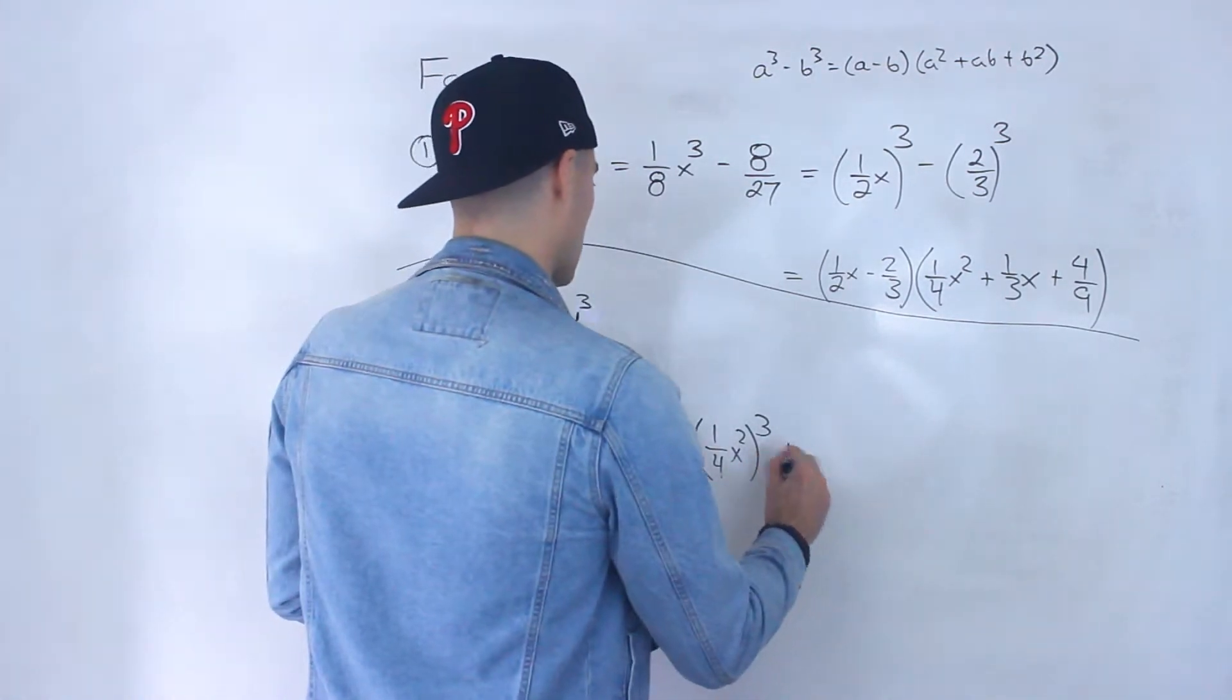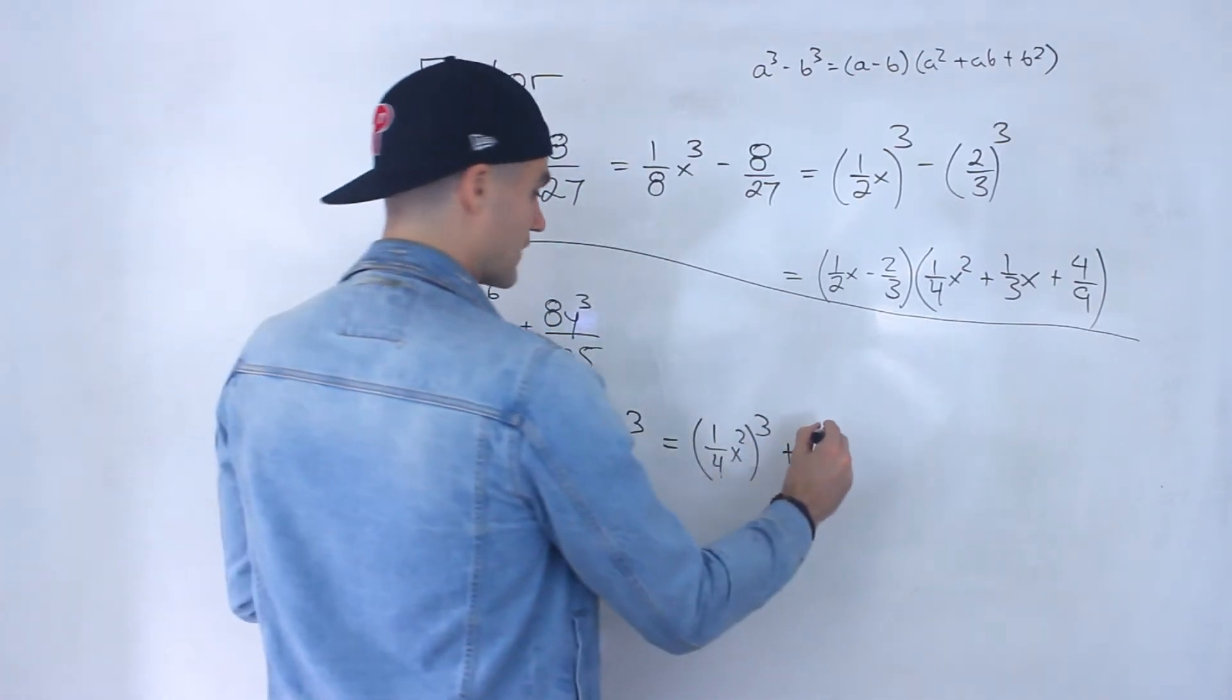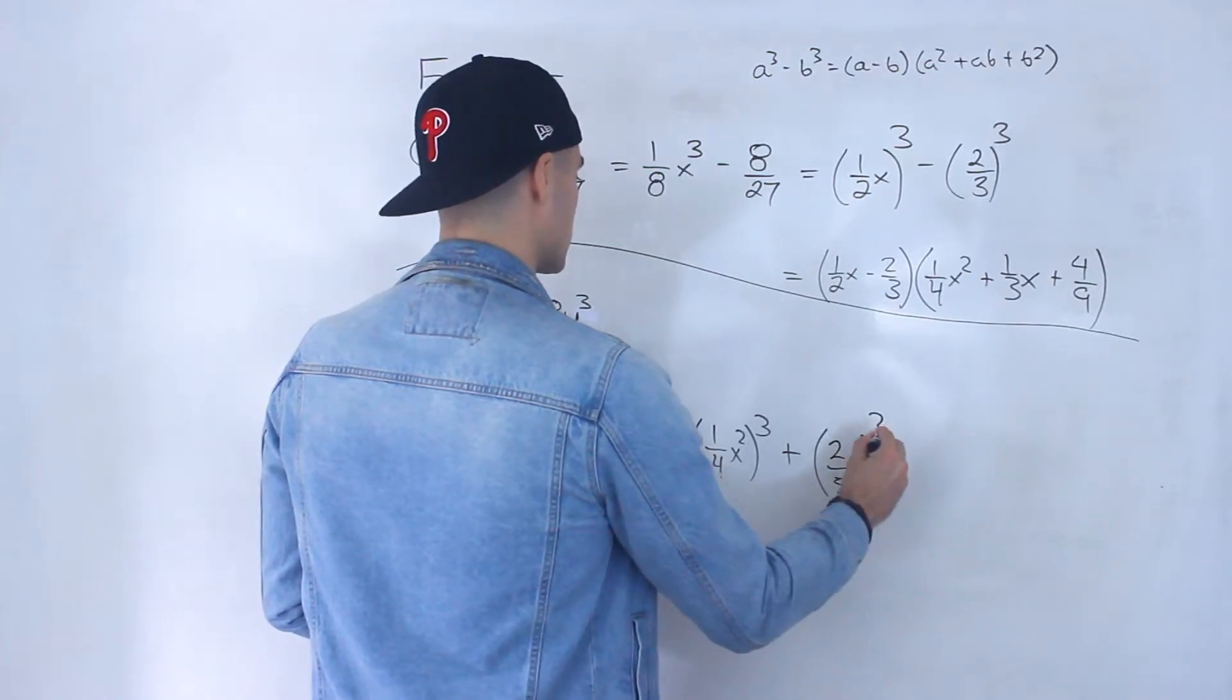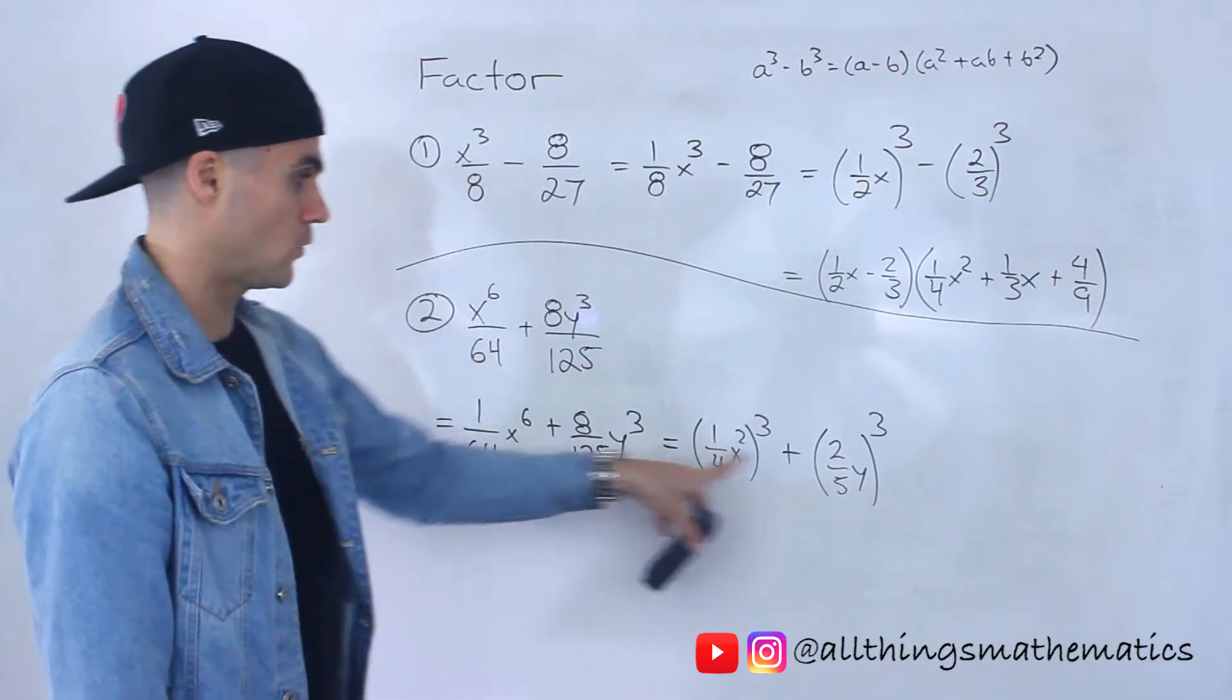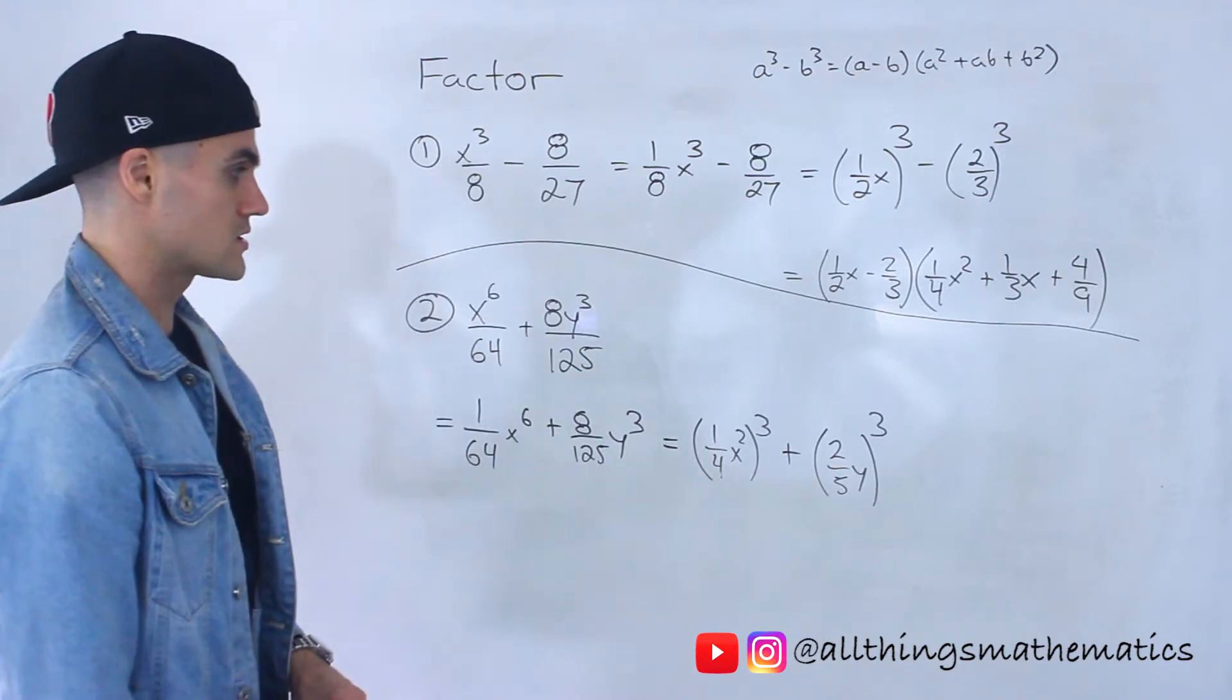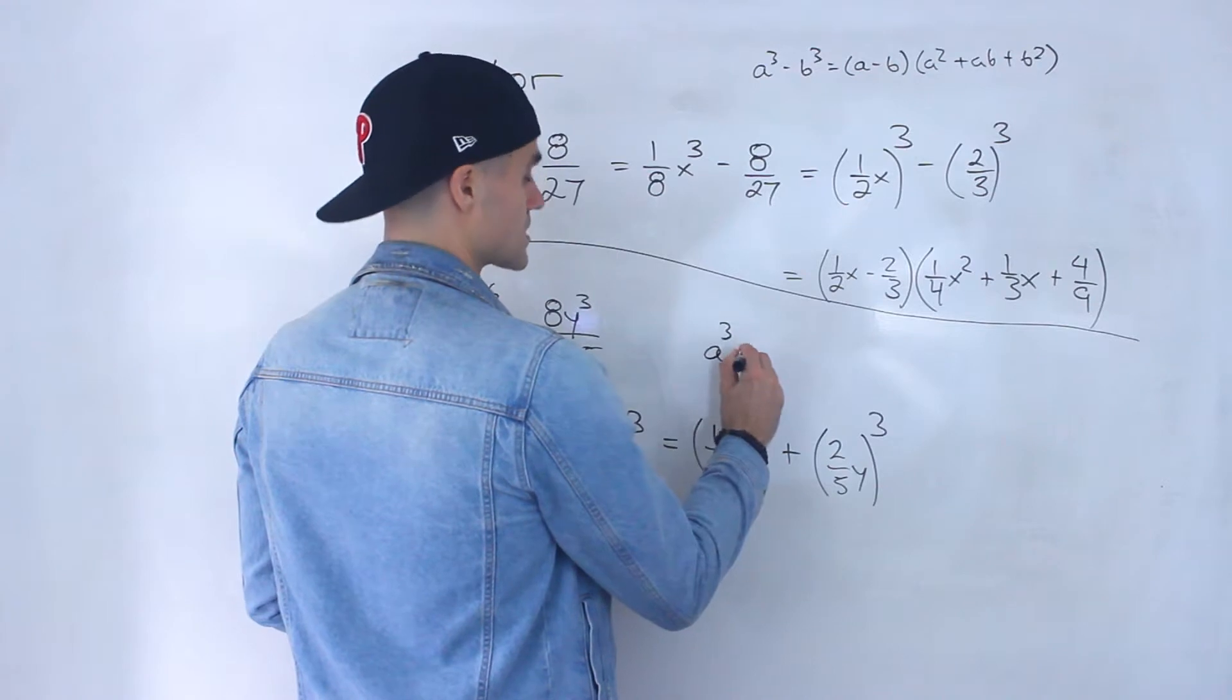And then over here, I'll have 8 over 125. So this would be 2 over 5y to the power of 3. Right? 2 over 5 to the power of 3 is 8 over 125. And then y to the power of 3 is y cubed. So this here is a sum of cubes.